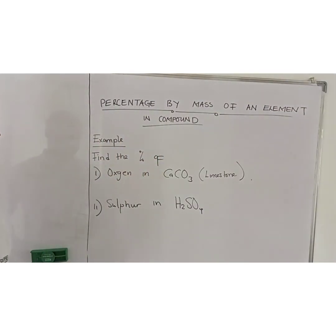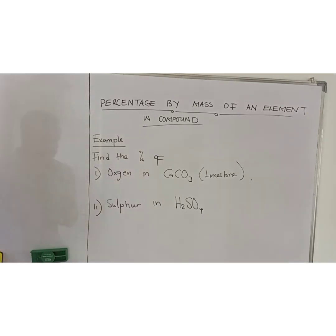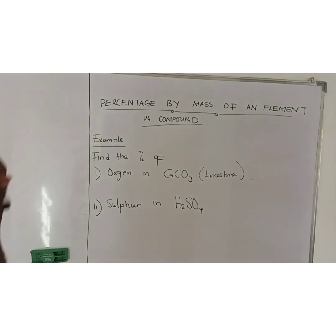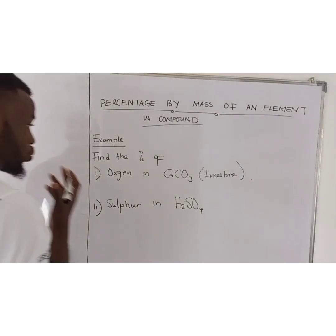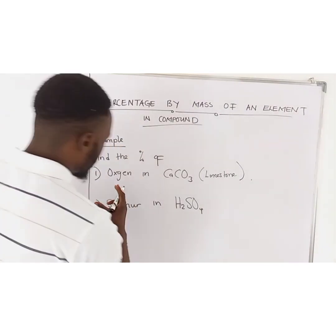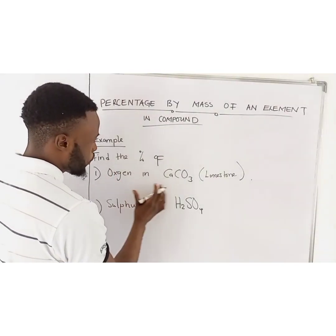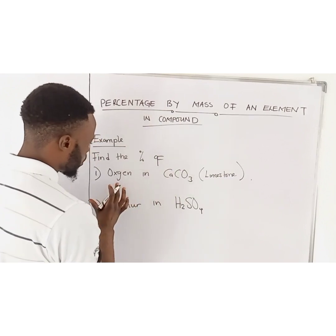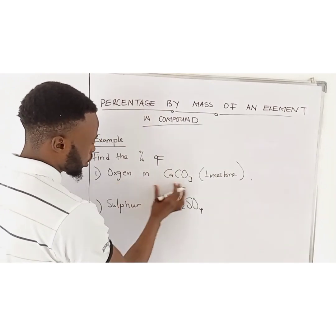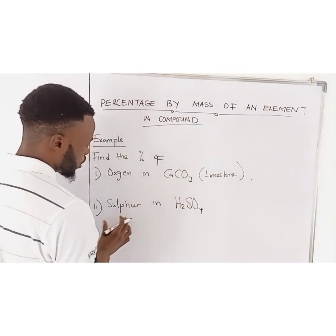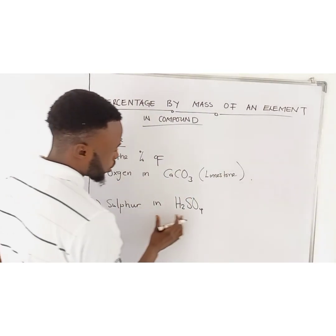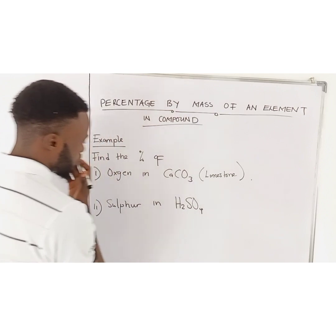Let's begin. Let's break this down. So now, what do you do? You are trying to find the percentage of oxygen in calcium carbonate and the percentage of sulfur in sulfuric acid.